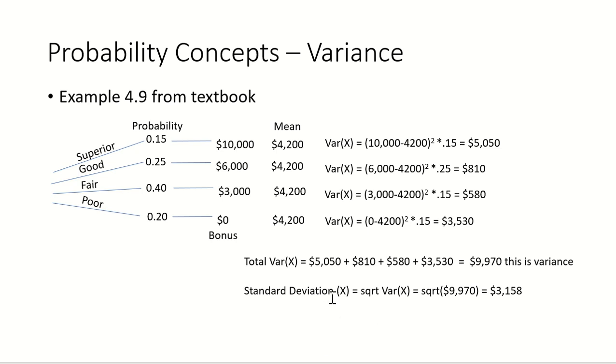The standard deviation is nothing more than the square root of the variance. So if I take the square root of the variance that I just calculated, the expected standard deviation associated with this schema for handing out bonuses is $3,158.